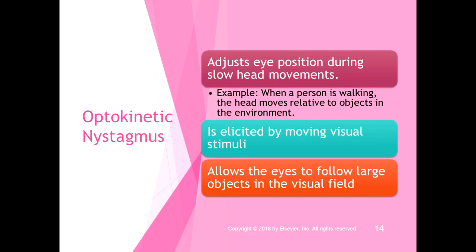Optokinetic nystagmus adjusts eye position during slow head movements, such as when you're walking and your head moves relative to objects in the environment. It is elicited by moving visual stimuli and allows the eyes to follow large objects in the visual field. That is our normal, natural nystagmus. Pathological nystagmus, by contrast, is caused by some kind of dysfunction.